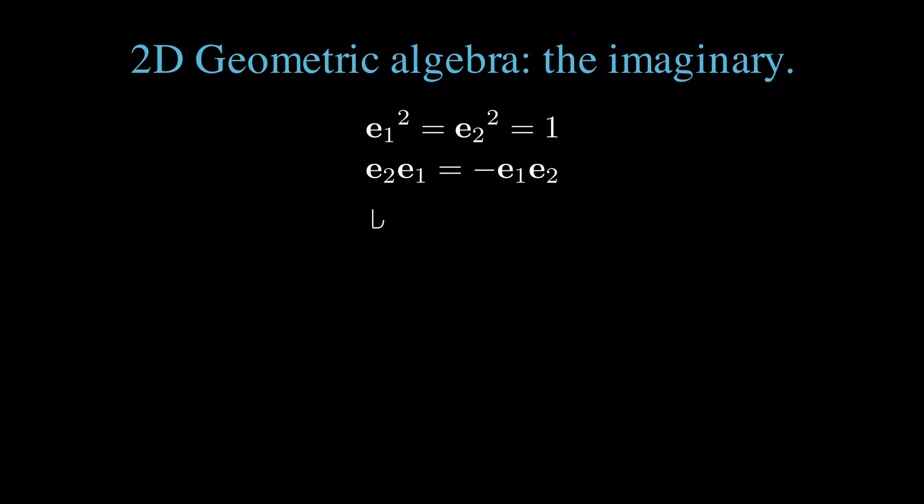Any two-dimensional bivector is proportional to e1 e2. We designate this as i, like the imaginary of complex numbers, since it also happens to square to minus 1.